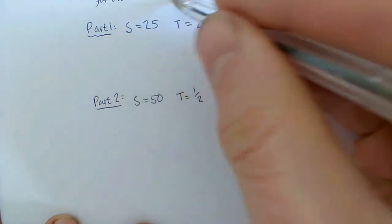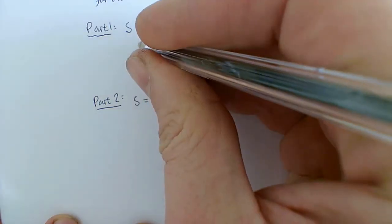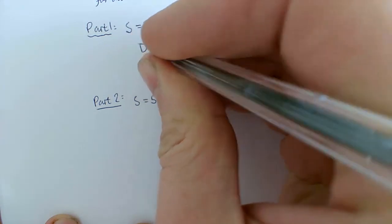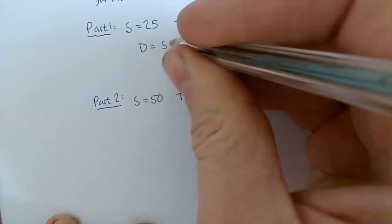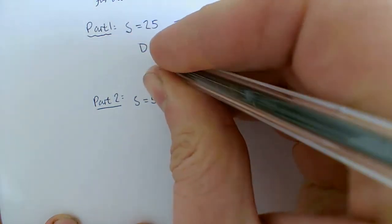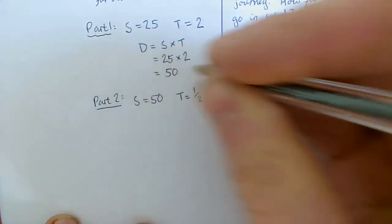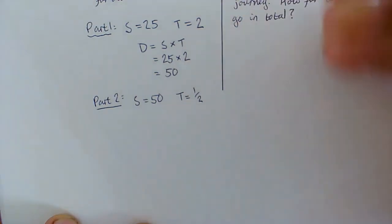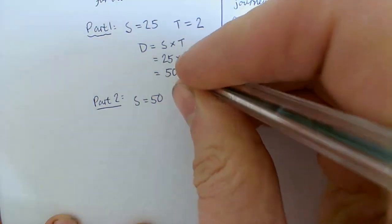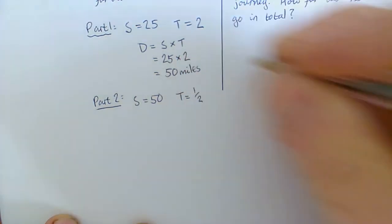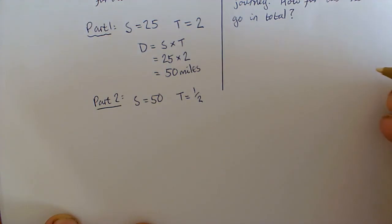How far did we travel in total? So we want the total distance. So let's work at the distance for each part, using D equals S times T. That's 25 times 2, which is 50. Going back to our question, we've got 50 miles. So the first section of the journey traveled 50 miles.